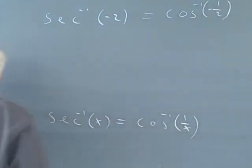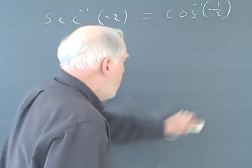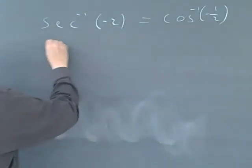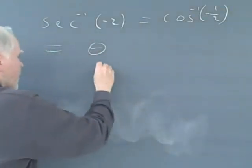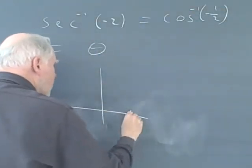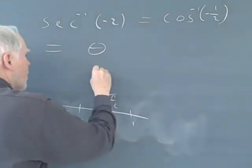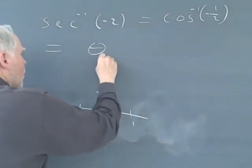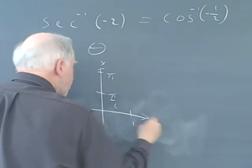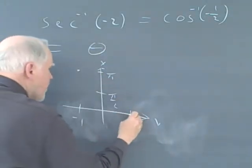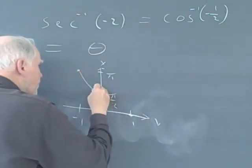Again, we have a negative argument there. So it's not going to be in the first quadrant. This is going to equal theta. And just for the heck of it, I'll sketch the 1, negative 1, pi over 2, pi, y, x. And we all should know that cosine hits here and hits here and goes like this, cosine inverse.